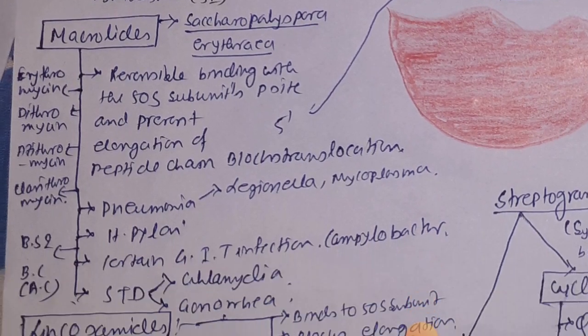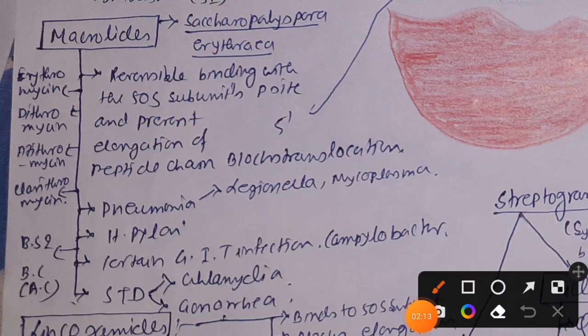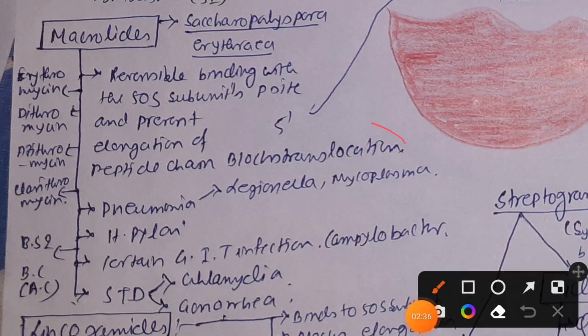Macrolides are isolated from Saccharopolyspora erythraea. Examples include erythromycin, azithromycin, clarithromycin, and dirithromycin. Macrolides reversibly bind to the P-site of the 50S ribosomal subunit, inhibit elongation of the peptide chain, and block translocation, thereby inhibiting protein synthesis.